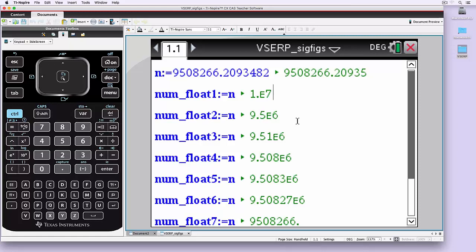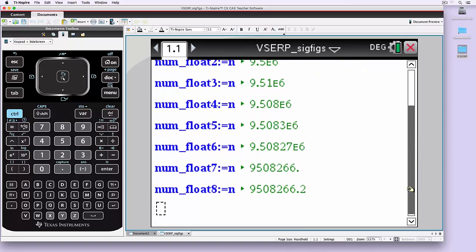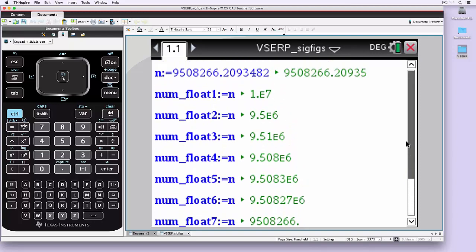One significant figure just says 1 by 10 to the minus 7. Two gives 9.5 by 10 to the 6. And in each increase in the number of floating points, you get a little bit more display.